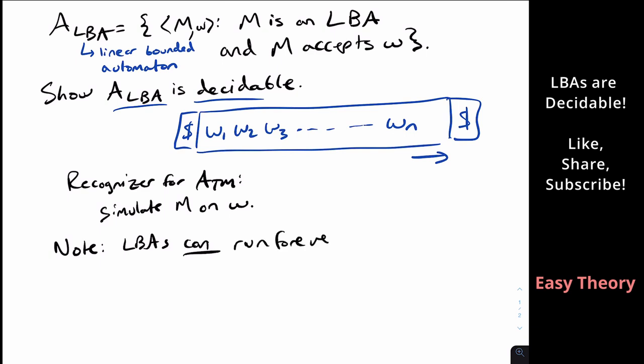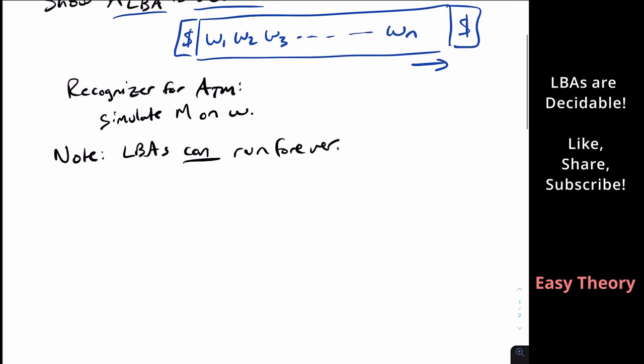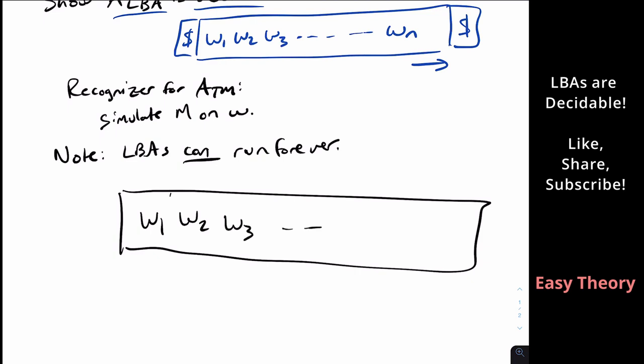And why is that? So what can happen is, let's say that this is the tape here, and let's say W1's here, W2, W3, all the way to Wn. Well, what we could do is, let's say we start here, we look at W1, and let's say I want to be nice and I'm not going to change anything on the tape. Well, what I could do is I can just go oscillating back and forth between the first two positions, and I just keep doing that forever and ever. So an LBA can run forever, even though the tape is limited.